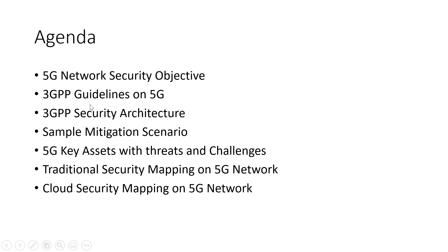Then we'll discuss 3GPP guidelines on 5G — what 3GPP says in terms of security and how we can secure our 5G network. Then we'll go through the 3GPP security architecture: the different domains, what is application stratum, what is home stratum, and how you can set up your security architecture. This is very important because security is usually considered an afterthought. Once we build the control plane and user plane, we tend to only address 3GPP security parameter controls without seeing security from a holistic view in terms of governance model and different domains. Before doing a 5G SA or NSA solution, try to build a security architecture around it.